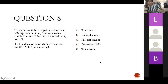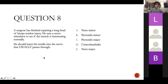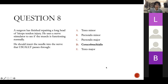Question eight: a surgeon has repaired a long head of biceps tendon injury and uses a nerve stimulator. He should insert the needle into the nerve that usually passes through — coracobrachialis. That's the musculocutaneous nerve, which pierces coracobrachialis. Well done.